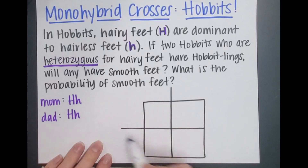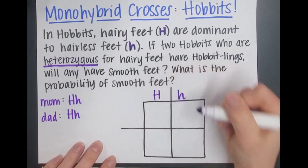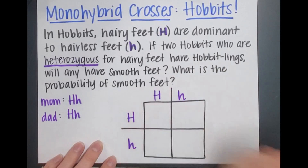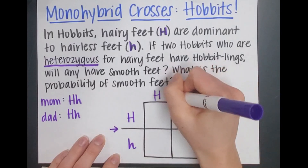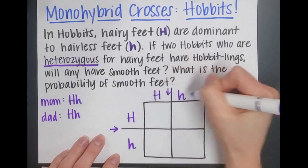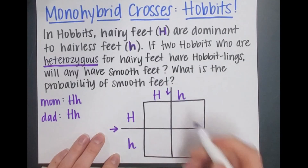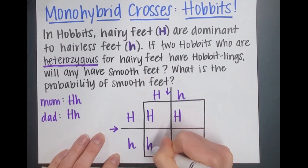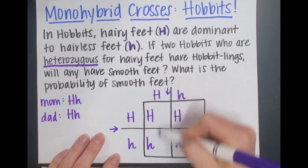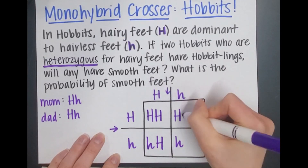We're going to put one parent in each side of the Punnett square. Since they're the same, it doesn't matter where we put them as long as they're together. Remember, if it's on the side those letters move across; if it's on the top those letters move down. Big H moves across, little h moves across, big H moves down, and little h moves down.